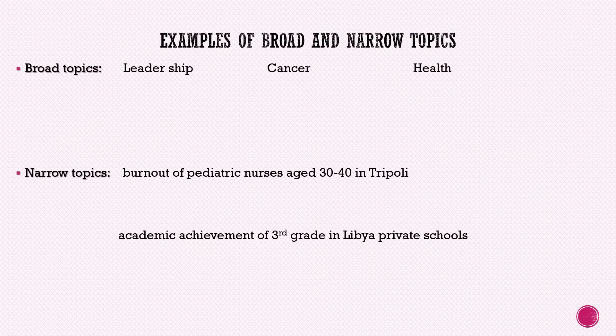Here I prepared some examples of broad and narrow topics. We have broad topics like leadership, cancer, and health. Leadership is way too broad because it has too many aspects and sides — we don't know if it's leadership in work or leadership in class. Cancer is unclear — we don't know if it refers to the zodiac sign or the disease. Health is also a very broad subject, covering mental health, physical health, healthy manners, and much more.